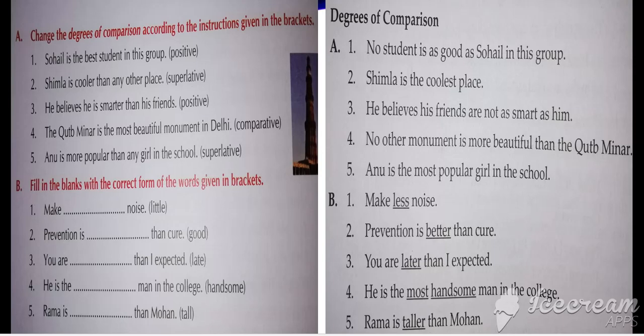Now see the fifth: 'Anu is more popular than any girl in the school.' We are using 'than,' meaning we are comparing. You have to convert this statement into the superlative degree. The answer is: 'Anu is the most popular girl in the school.'